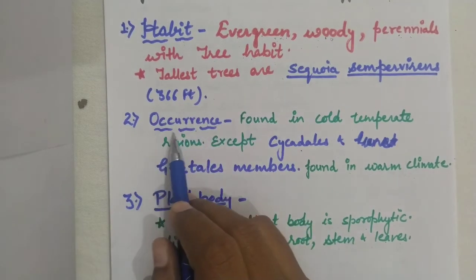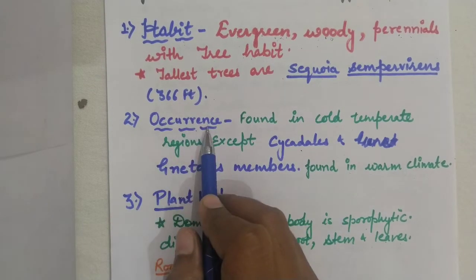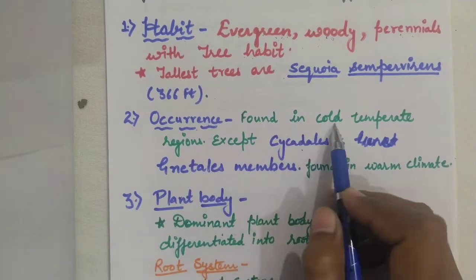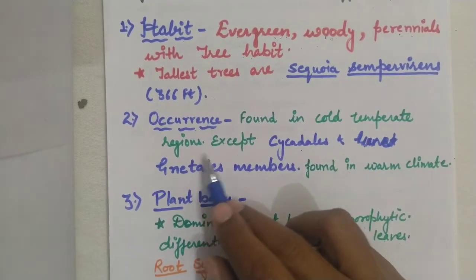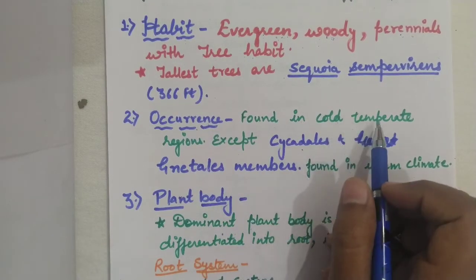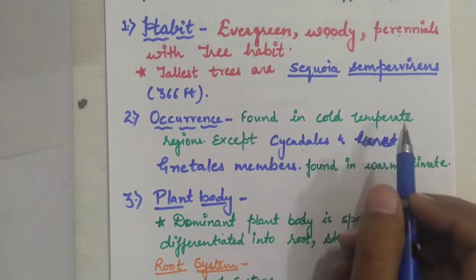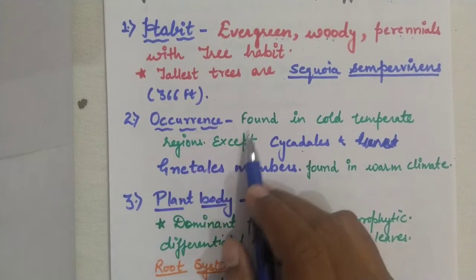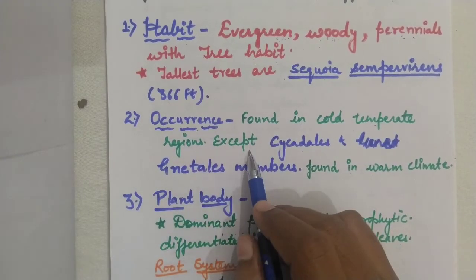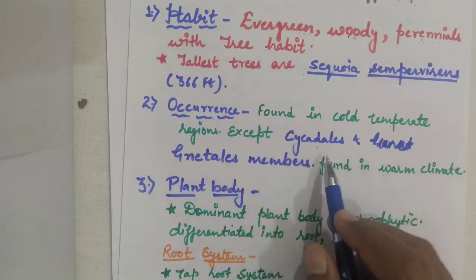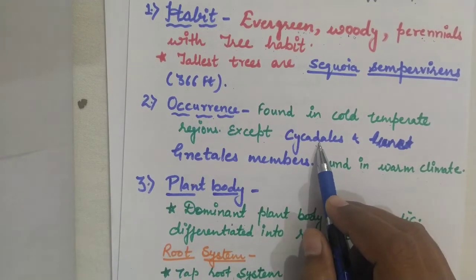The second character is occurrence. Gymnosperms are found in cold temperate regions, except for some groups of gymnosperms.